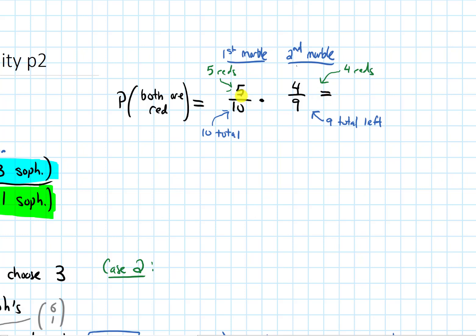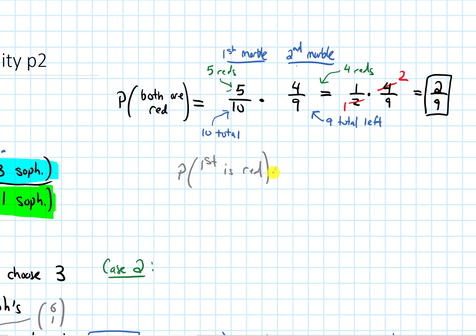Multiplying these: five over ten simplifies to one half, so we get one half times four over nine. Canceling the four and the two gives one half times two over nine, which equals two over nine. Breaking this down, the first fraction was the probability that the first marble is red, times the probability that the second marble is red given that the first is red. Collectively, multiplying these says the first marble needs to be red and the second marble also needs to be red — giving us the probability that both are red.